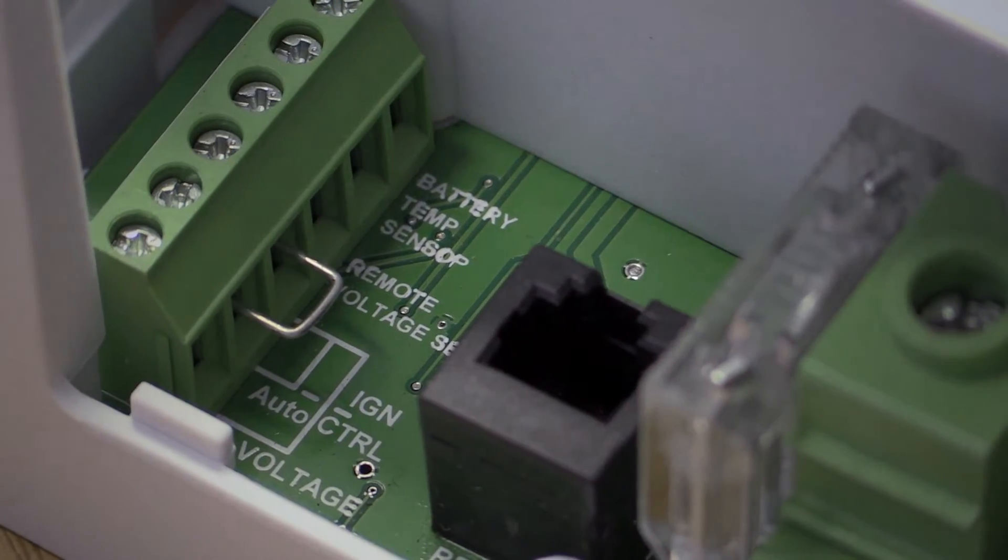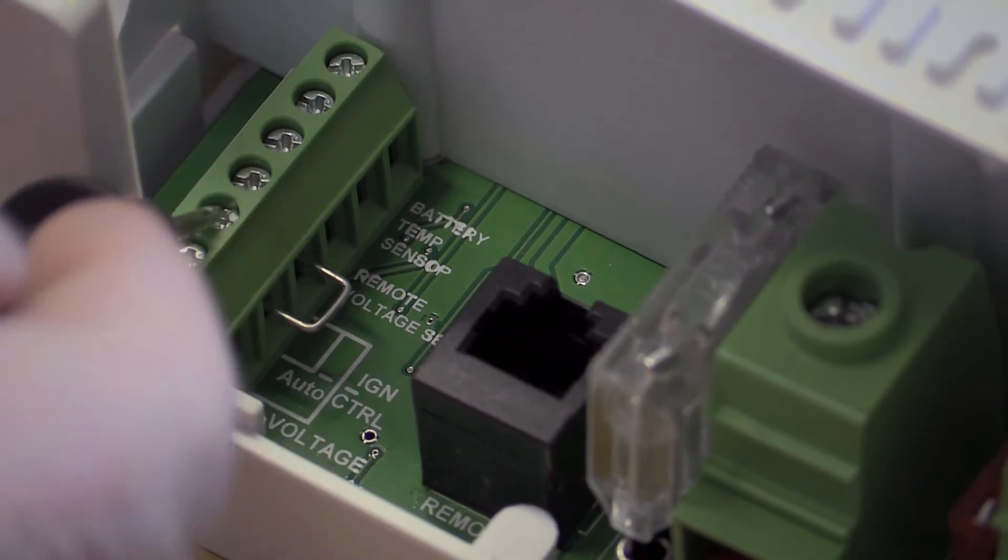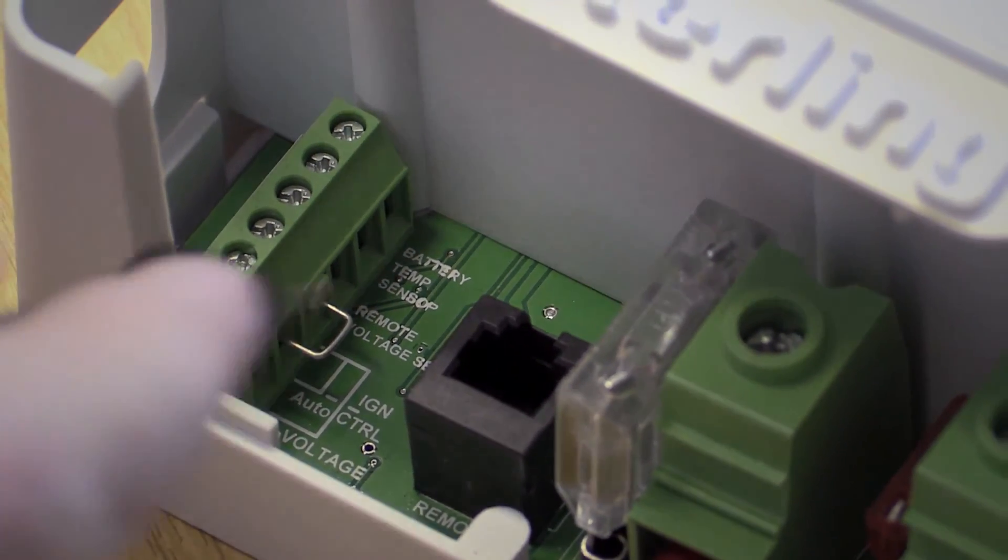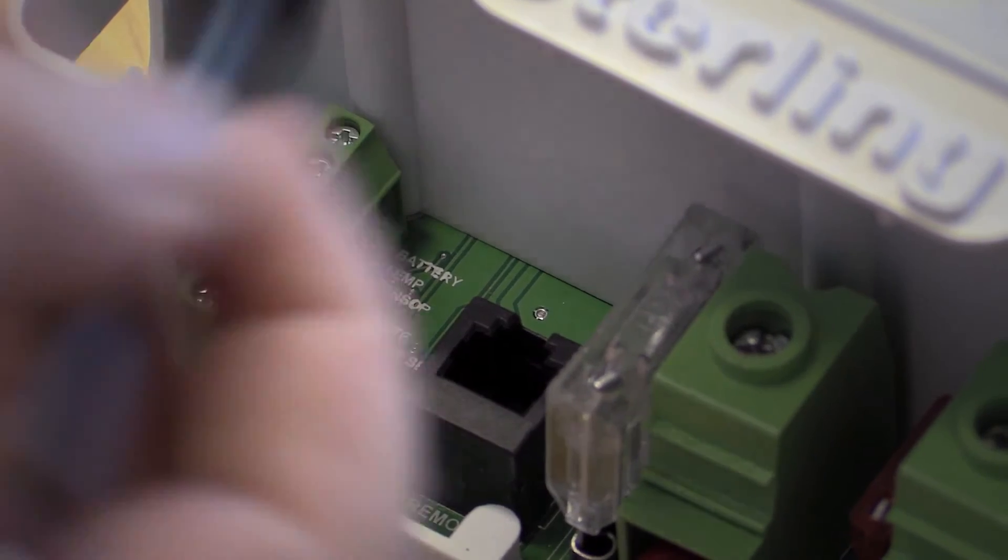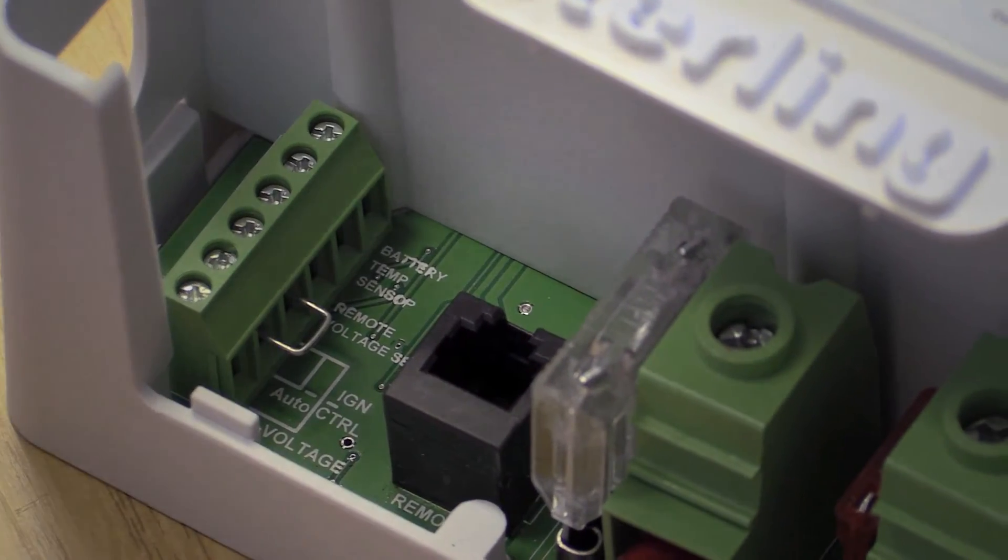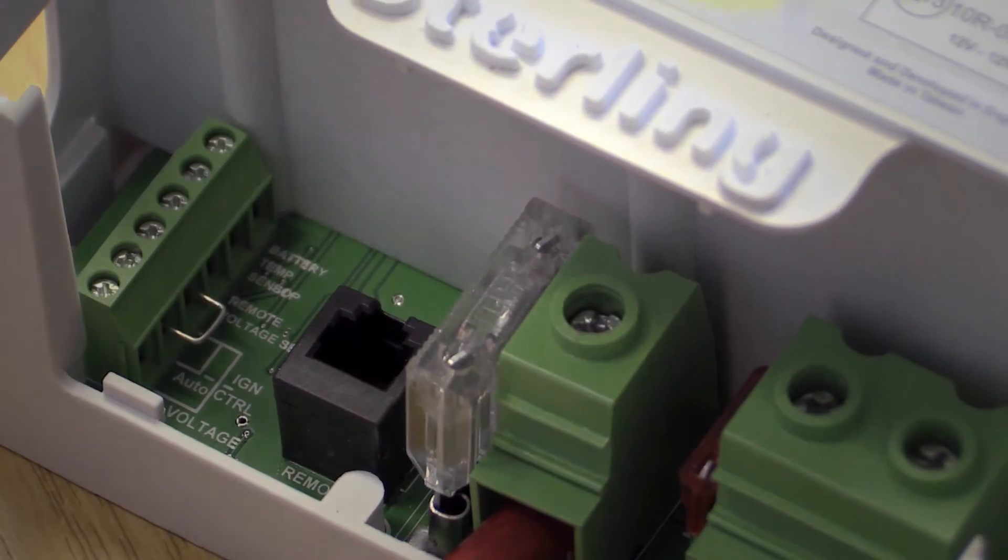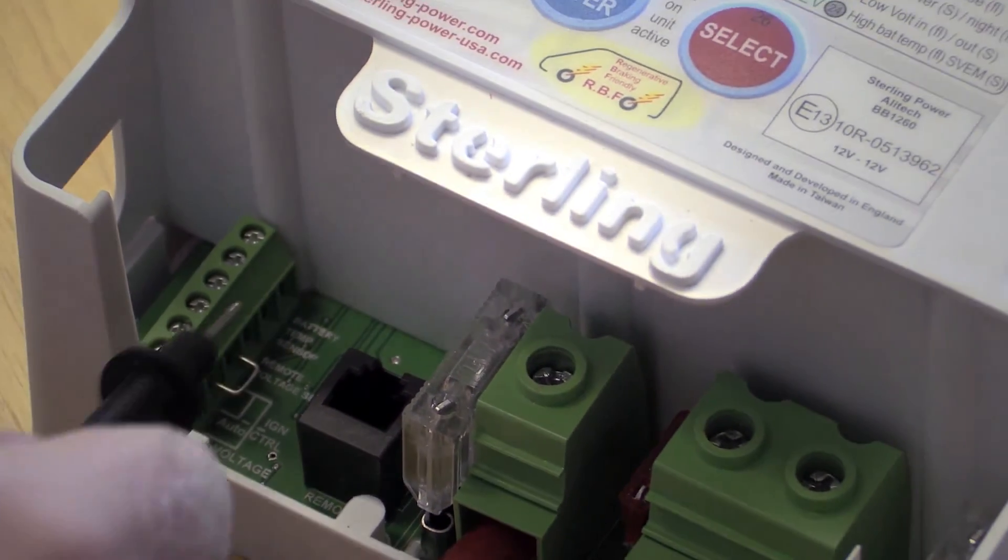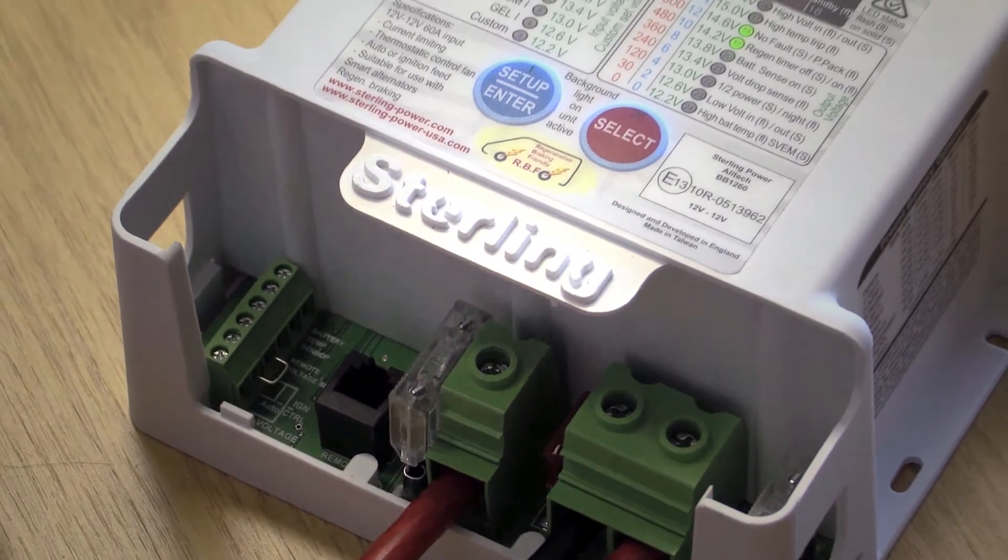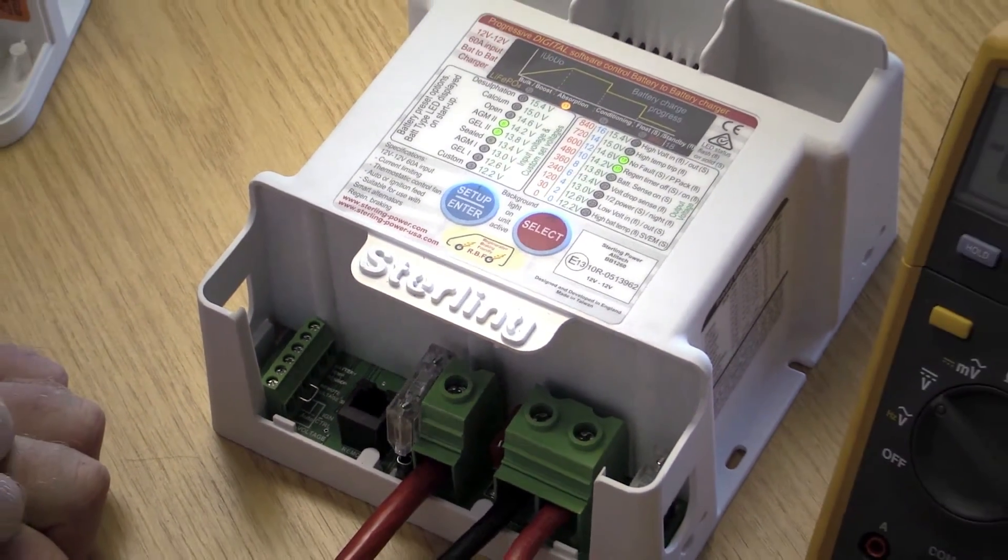So yeah, that would be one thing to check. Sometimes these fall out or they just get taken out for whatever reason. If there's nothing in there whatsoever, the charger simply won't operate. You can have whatever voltage you want, albeit healthy, on the input and you won't be getting anything on the output because it requires some connection down there in order for it to operate. So there are four things there.